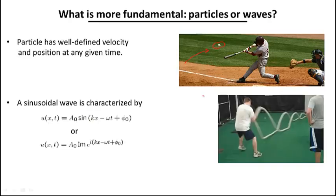In contrast, when we are talking about waves, it doesn't really make sense to ask the question where the wave is located. Here I am showing a wave which is generated using a rope, and just by looking at it you realize there is no well-defined position of a wave. However, what we can do is define the wave velocity and the wave vector, and also describe a wave using a mathematical expression.